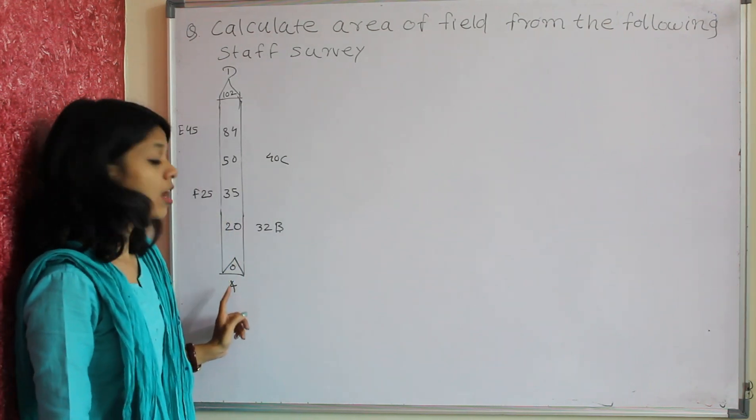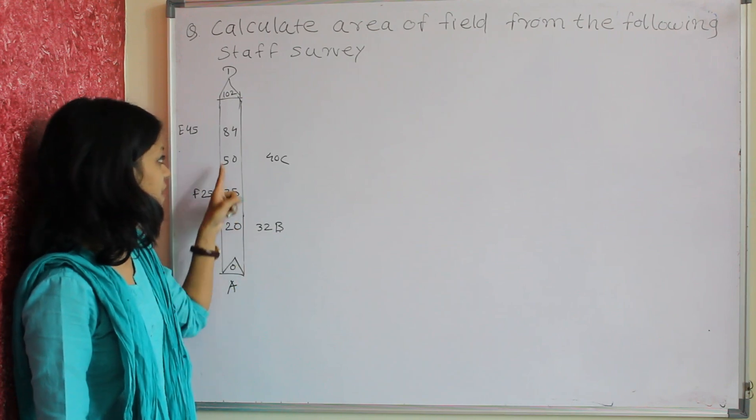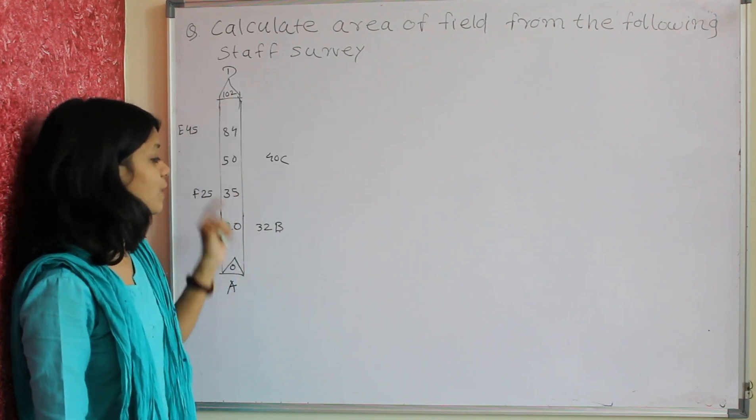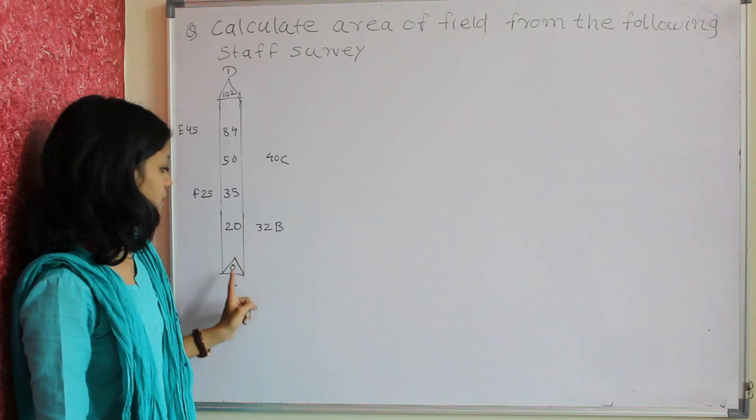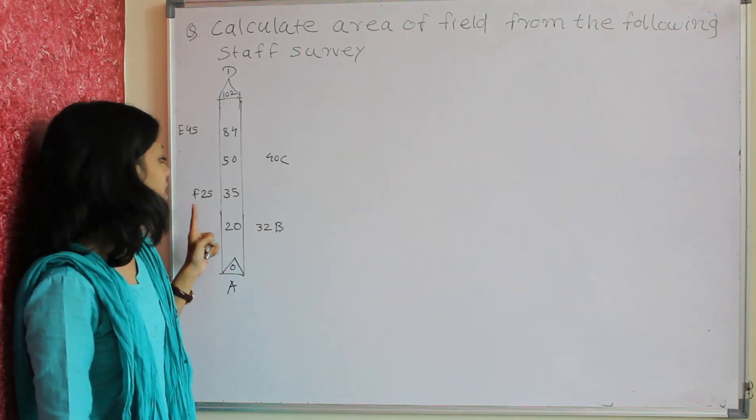Starting from station A at chainage 0, 20, 35, 50, 84, and 102 meters, with offsets at B 32 meters, at C 40 meters, at E 45 meters, and at F 25 meters.